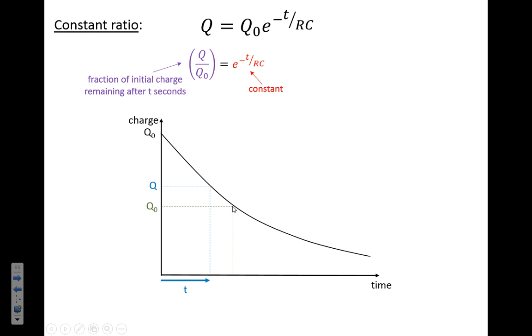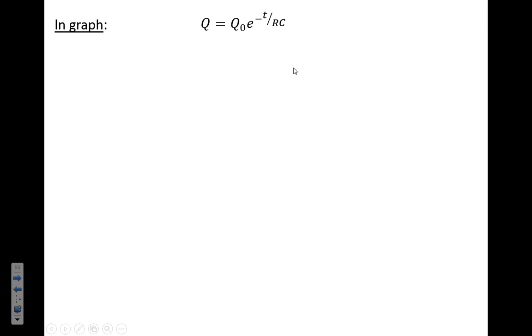But it doesn't matter where we start. So we could start with a different value of Q as our initial one, and then after that same time interval, the charge we've got then divided by the initial amount will still be that same fraction.